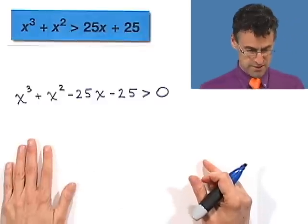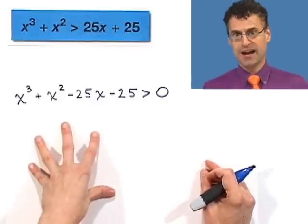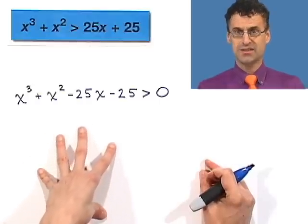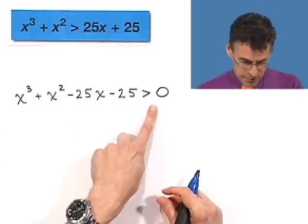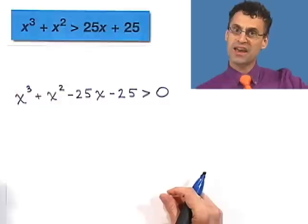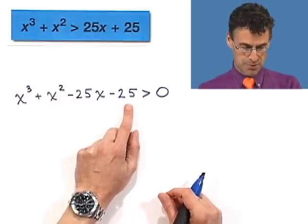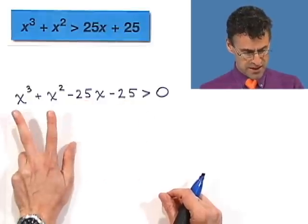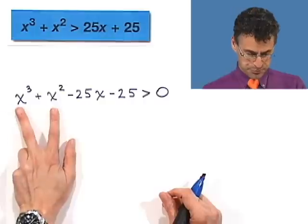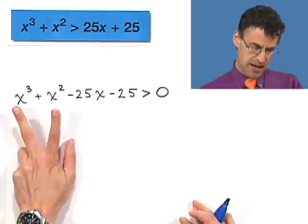First, let's factor this. It's a cubic — these things tend to be factorable, otherwise the teacher wouldn't ask. Look for patterns. There's no common x factor throughout because of the constant term negative 25. But notice there are two 25s. From the first two terms, I can factor out x squared: x squared times (x plus 1). Let me see what happens with the remaining terms minus 25x minus 25.